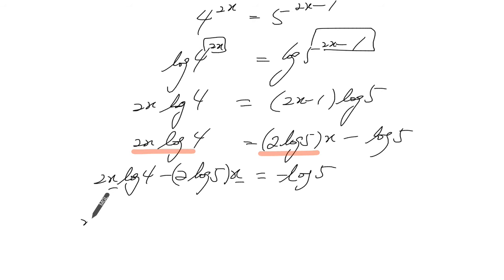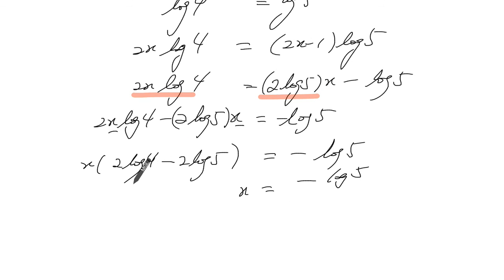So now we can factor out the x and we get 2 log of 4 minus 2 log of 5 minus log of 5. So x will equal to minus log of 5, all of it divided by this.